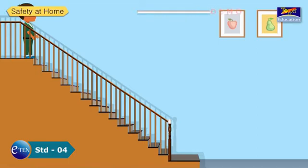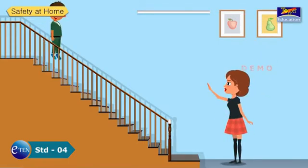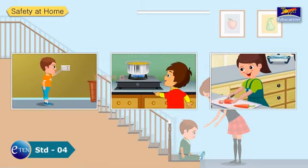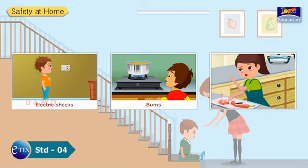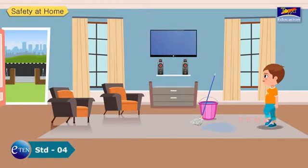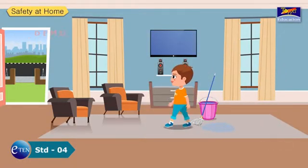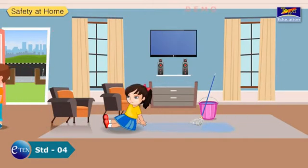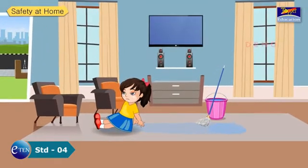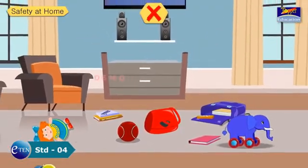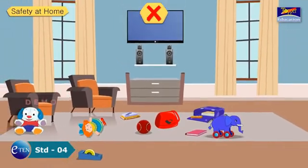Safety at home. When you are at home, injuries may be caused by slipping on the floor, electric shocks, burns and cuts, if you are not careful. Therefore, you must follow some safety rules. Immediately wipe any liquid that is spilled on the floor, as someone may slip and fall on the wet floor. We must keep the floor clean and dry. Do not leave your toys, bags, books and other things lying on the floor.